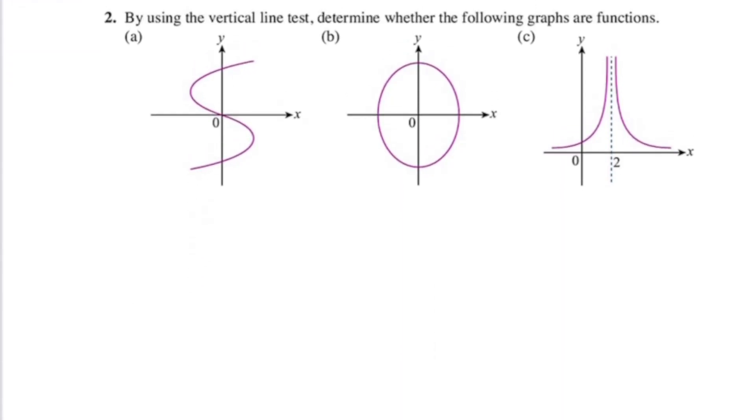Now moving on to question number 2. Using the vertical line test, determine whether the following graphs are functions. The first one, remember vertical line test basically means we draw a vertical line downwards and determine the number of times the line cuts the curve. If the line cuts the curve at three points, it simply means for a single value of x, for the single object of x, let's say x1, you have three different images or three different y values. So for one object with three images is actually called one-to-many.